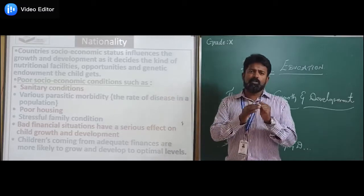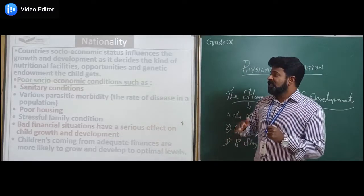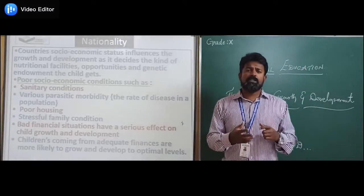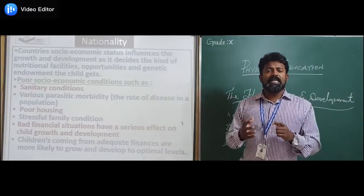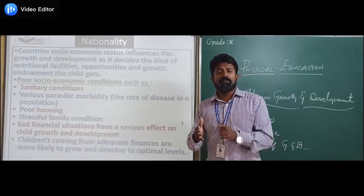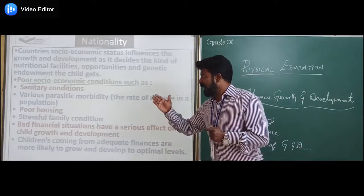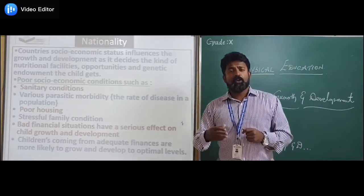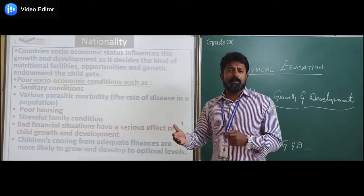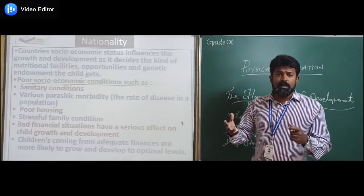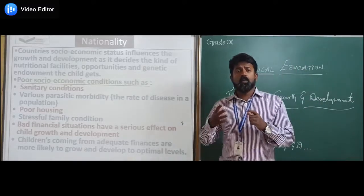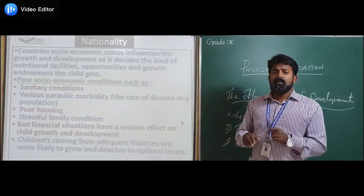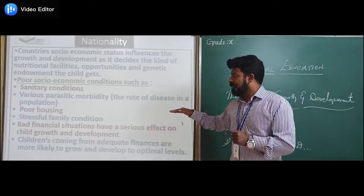Under poor socio-economic conditions, sanitary conditions will be very poor as necessary provisions cannot be made for society. Then comes increased parasitic vulnerability — the rate of disease in the population, like flu or COVID-19 (which is the best current example). If conditions are not good and there is poor socio-economic status, the country cannot overcome the rising rate of disease in the population.